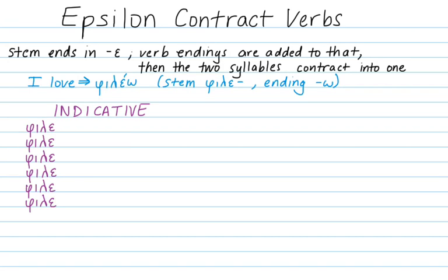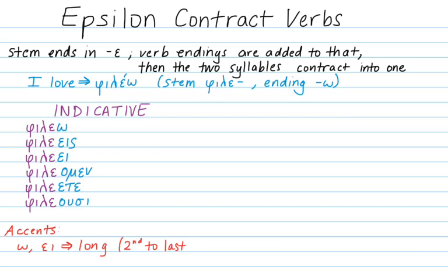Let's look at the indicative. I've written out the stem six times. To it we add our regular endings, and then before we do any contractions we apply our accent following the accent rules. If the last syllable is long, then the accent goes on the second to last syllable. This applies to phileo, phileas, and phileai, because the last syllable is long in all three of those.